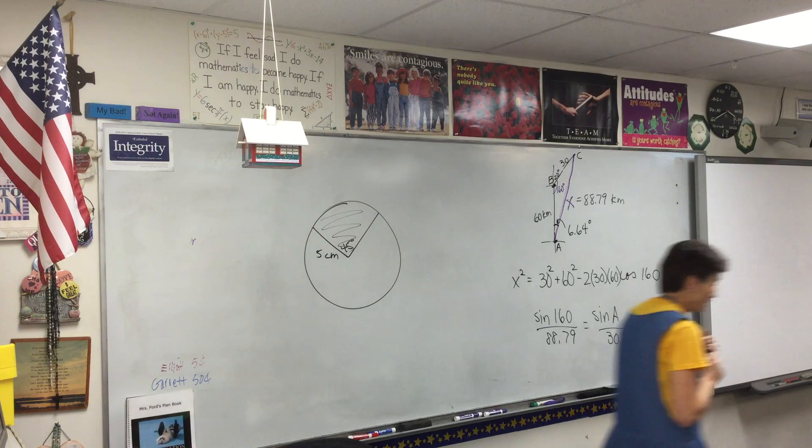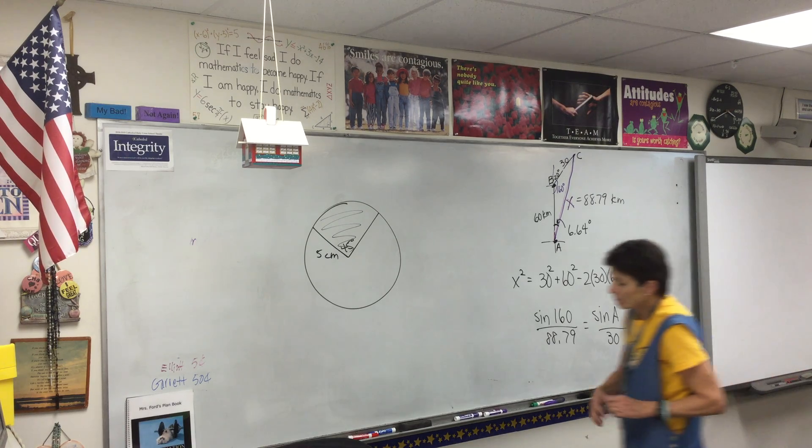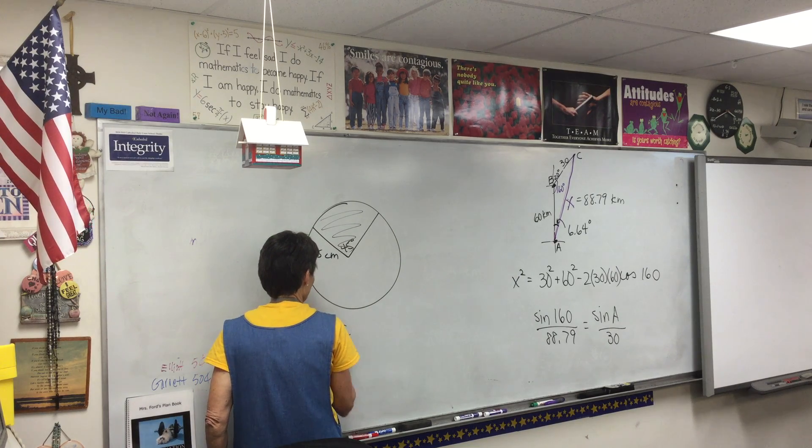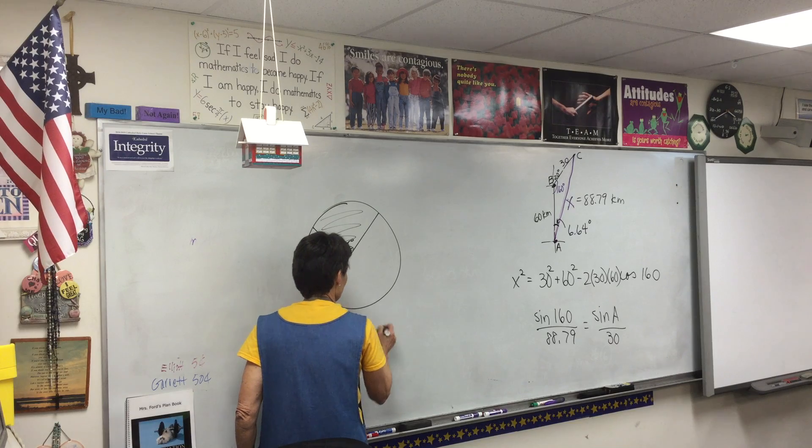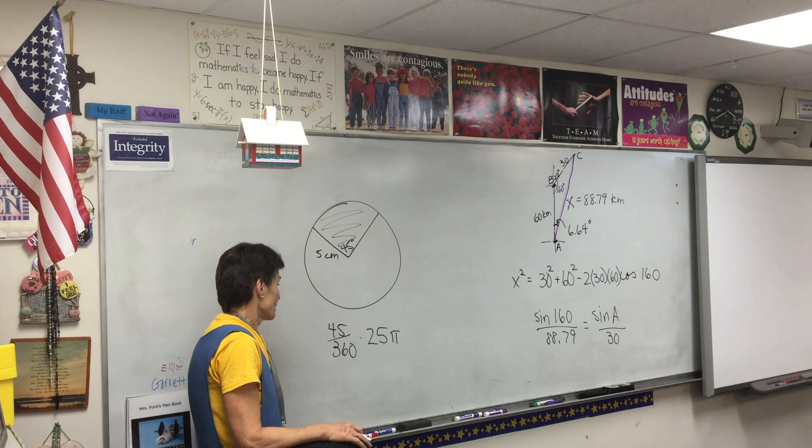But we're going to figure that out because we're going to figure out what that angle is. Alright, now how are we going to do that? How are we going to find that angle? Law of sines, exactly. One more time, if you want a side or an angle of a triangle, you're going to use the law of sines or the law of cosines. That's how you're going to find sides and angles. So what's the setup? And then we're going to use the law of sines. Sin 160° over 88.79 equals sin A over its side, which is 30. We're trying to get angle A. The side across from A would be 30. Is that what we all got? 6.64°.